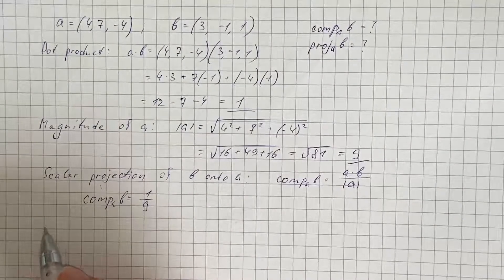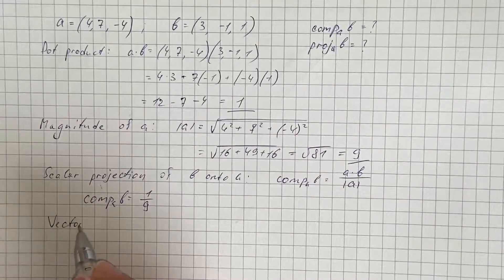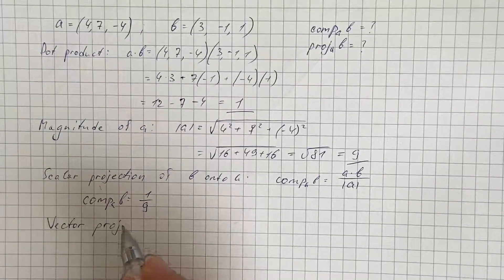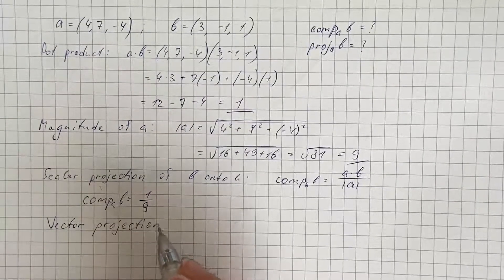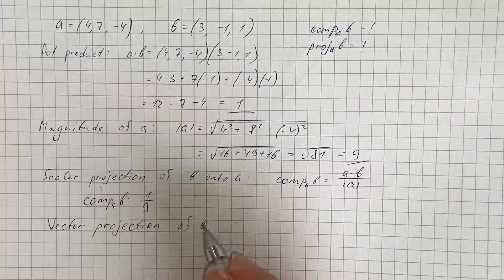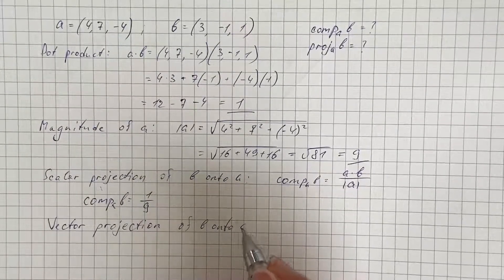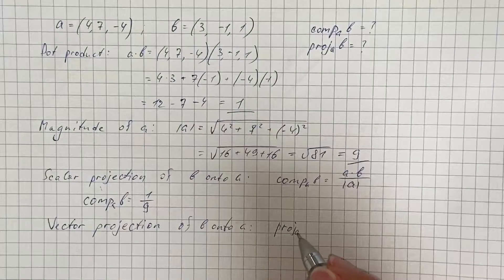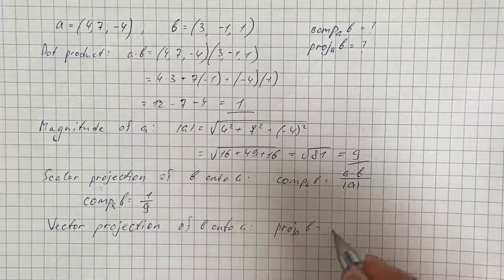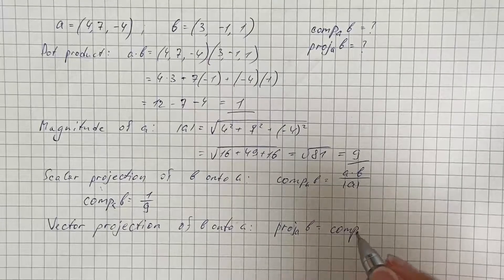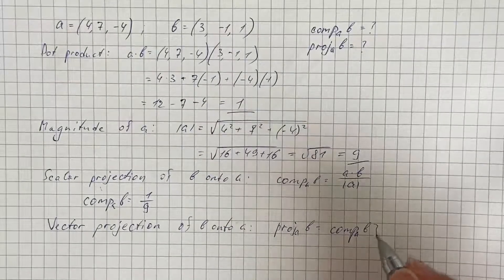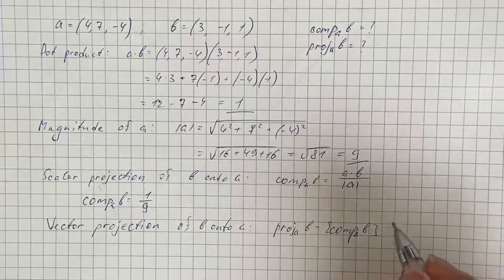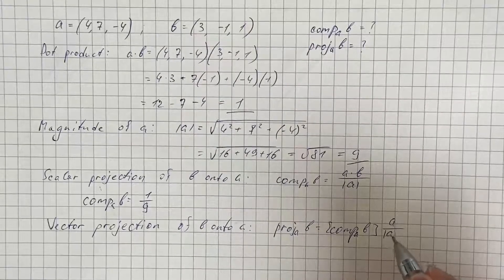And now we're going to find vector projection. And it's given by scalar projection times vector a over magnitude of a.